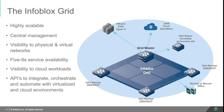One appliance is designated as the grid master, acting as the controller of the entire grid. Other appliances run as grid members. Each grid member can run one or more services like DNS, DHCP, and IPAM. All communication between the grid master and grid members is encrypted and secured with certificate-based authentication. We deploy grid masters as HA pairs to ensure service availability. The grid manager application running on the grid master provides access to all services running on the grid.